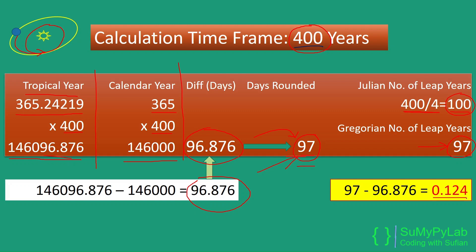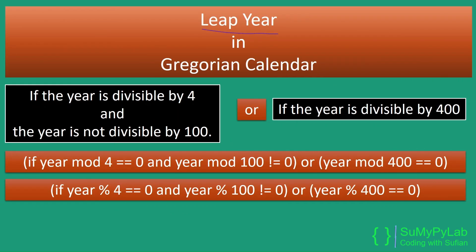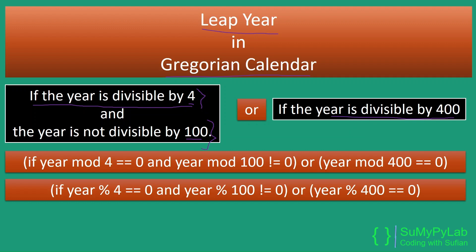Now we will see how these 97 days are adjusted in the calendar over 400 years. The leap year calculation in the Gregorian calendar works as follows: if the year is divisible by 4 and not divisible by 100, then it's a leap year; or if the year is exactly divisible by 400, then it's a leap year. Any one of these two conditions must be true. That is, in the Gregorian calendar, not all century years are leap years — only century years that are multiples of 400 are considered leap years. In this way, in a range of 400 years, 3 leap years are eliminated compared to the Julian calendar. Mathematically, the logic may also be written using modular division, where mod gives the remainder of the division.